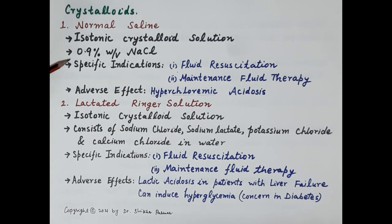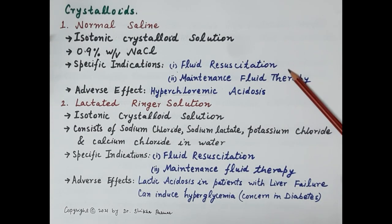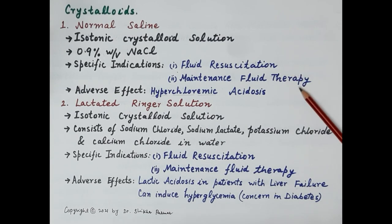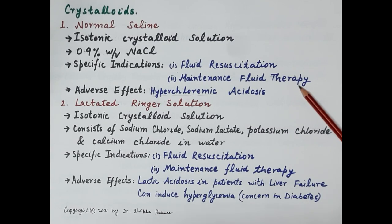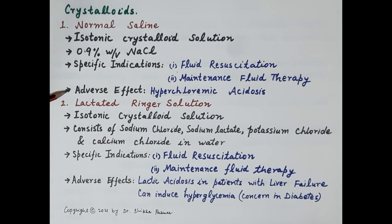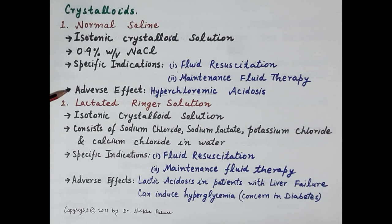Normal saline is commonly used for fluid resuscitation — that is, to replenish lost body fluids — and it is an important maintenance fluid therapy as it restores circulatory volume. Regarding adverse effects, if normal saline is administered in large quantities, chloride ions are increased within the blood, and therefore it can cause hyperchloremic acidosis.